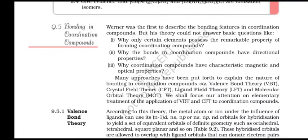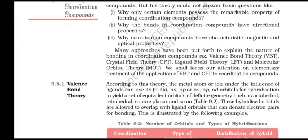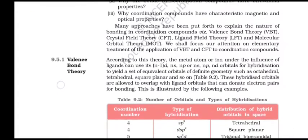Bonding in Coordination Compounds: Werner was the first to describe bonding features in coordination compounds, but his theory cannot answer basic questions like why only certain elements form coordination compounds, why M-L bonds have directional properties, or why coordination compounds have characteristic magnetic and optical properties. Many approaches have been put forth to explain the nature of bonding: valence bond theory (VBT), crystal field theory (CFT), ligand field theory, and molecular orbital theory. We shall focus on elementary treatment of VBT and CFT applied to coordination compounds.